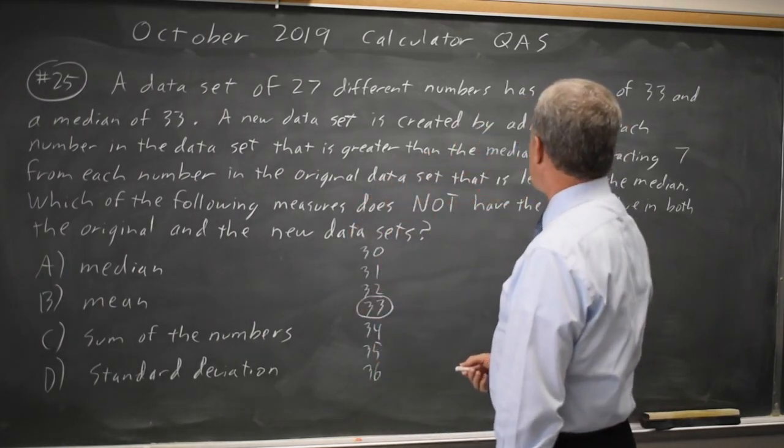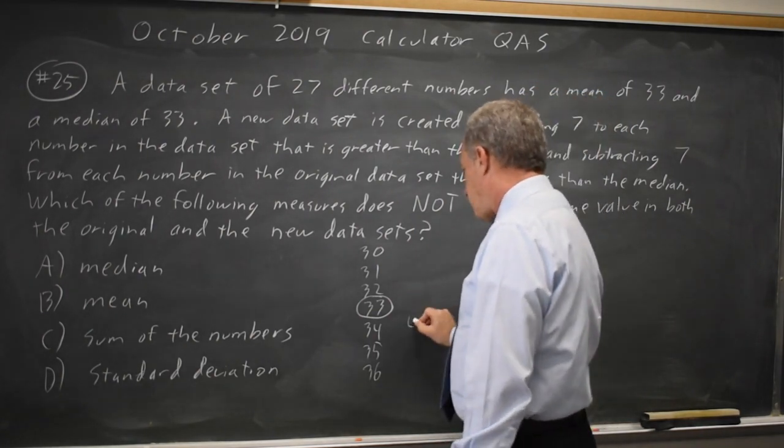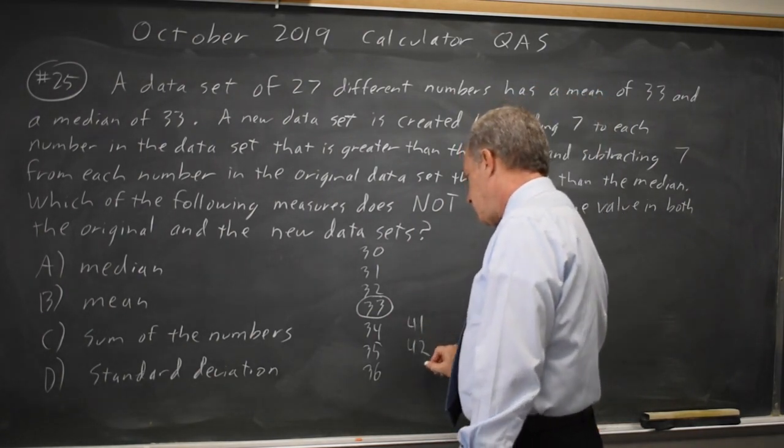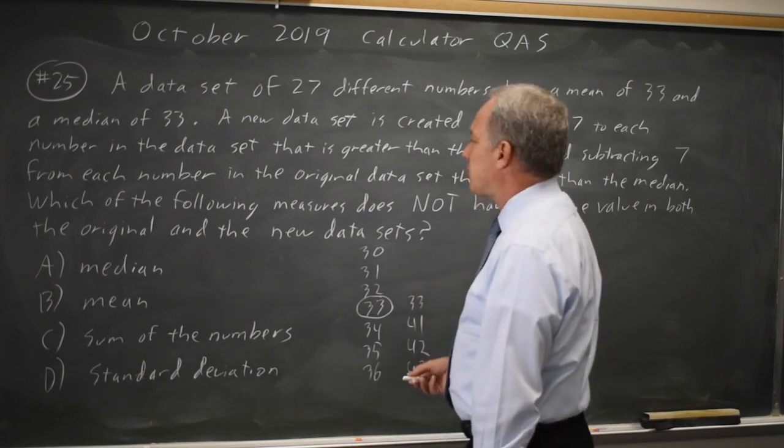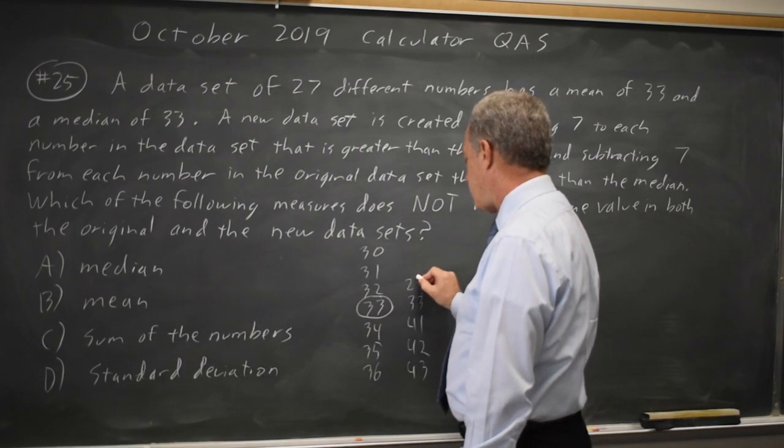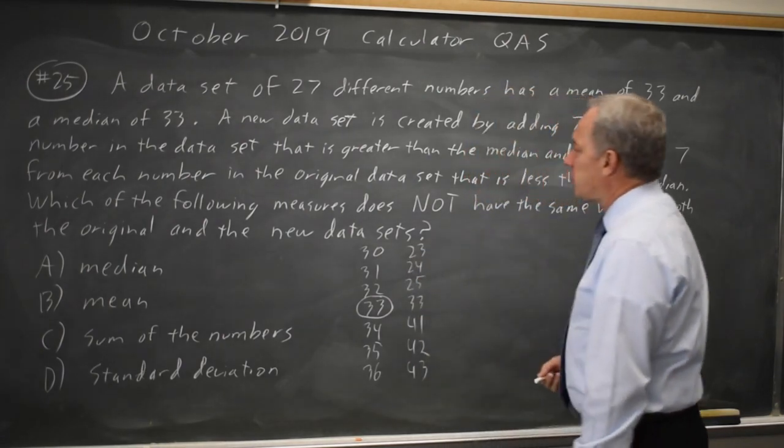And College Board says add 7 to each number that's greater than the median, so that would be 41, 42, and 43. Keep the 33. Subtract 7 from each number that's less. That would be 25, 24, and 23.